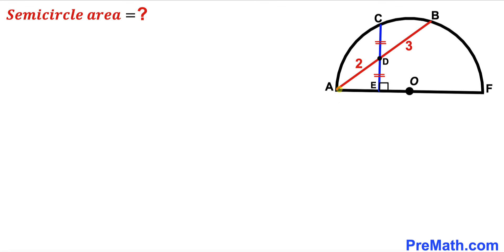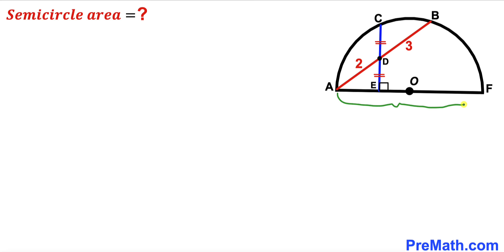As a result, segment AD is 2 units whereas segment DB is 3. Moreover, segment CD is equal to segment DE, and furthermore AF is the diameter of this semicircle. Our task is to calculate the area of this semicircle.